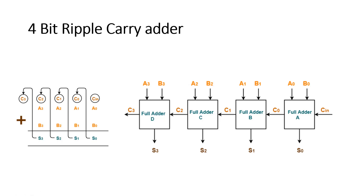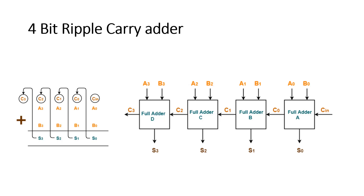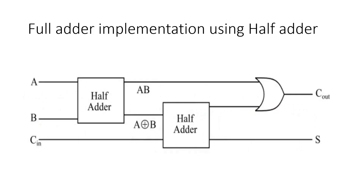Now let us compare the area of both implementations. A four-bit ripple carry adder needs four full adders, while a four-bit incremental logic needs four half adders. The key question is: what is the area difference between a half adder and a full adder? As shown in this diagram, a full adder is implemented with two half adders plus an OR gate. Therefore, a full adder uses more than double the area of a half adder. In short, a four-bit ripple carry adder consumes more than double the area of four-bit incremental logic, because the OR gates are also included.